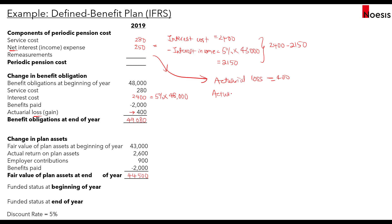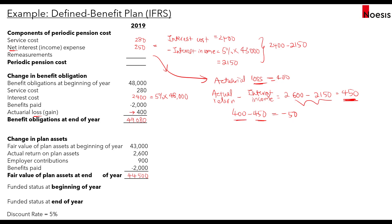The total periodic pension cost comes to 480. We confirm this using the formula: total periodic pension cost equals employer contributions minus change in funded status. The beginning funded status is 43,000 minus 48,000, which is negative 5,000. The ending funded status is 44,500 minus 49,080, which is negative 4,580. The change in funded status is negative 4,580 minus negative 5,000, equaling 420. So total periodic pension cost is 900 minus 420, which equals 480 — matching our earlier calculation.